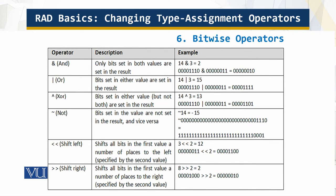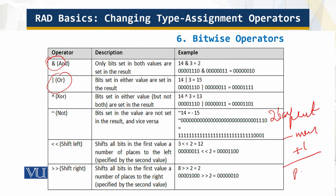Finally, there are the bitwise operators which act on the bits. For example, this is the logical AND, this is OR, and this is NOT — the 2's complement. The 2's complement is: you invert and add 1 to get the result, and this is how you get the negative. That's all for this module. Thank you for your time.